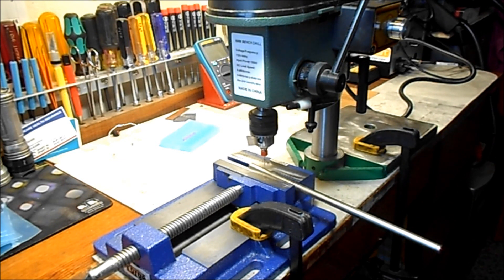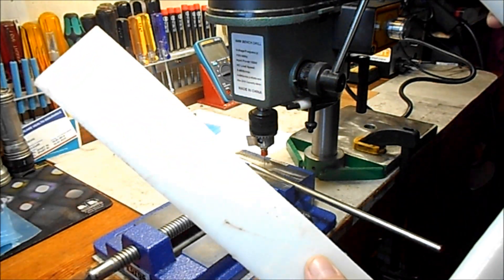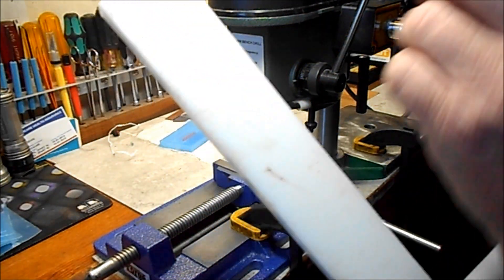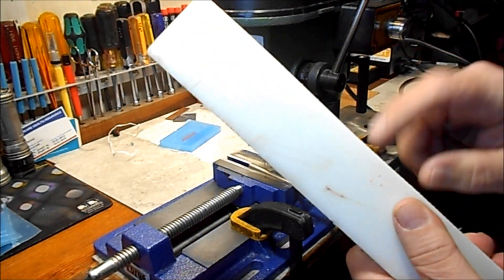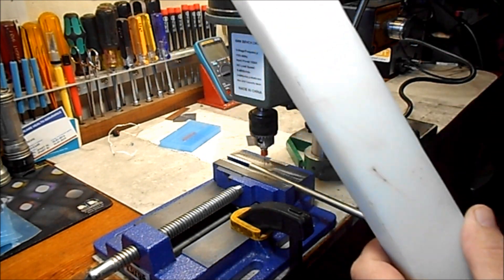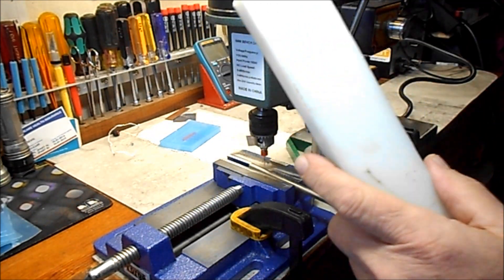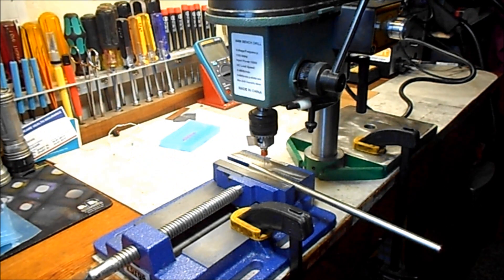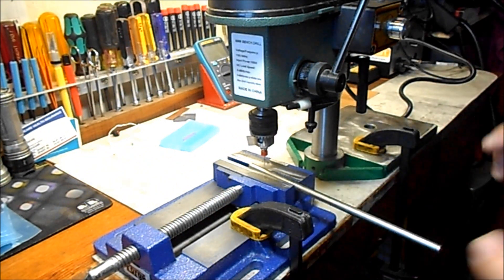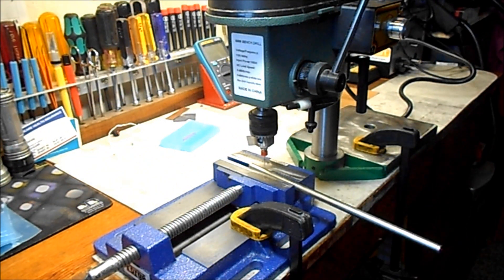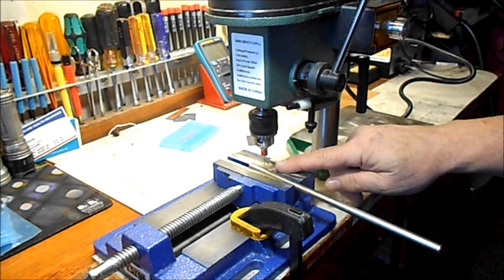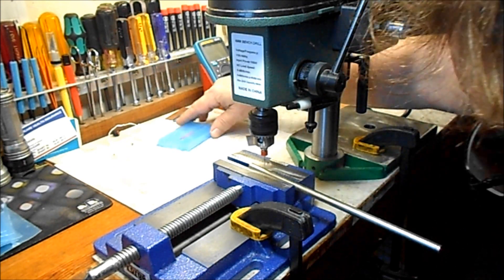I've got some delrin, which is an acetyl plastic that's chemical proof, and I've got some tempered glass coming. We're going to make a little immersion tank for etching copper. I've got a number 71, I think it's 73 drill set up.